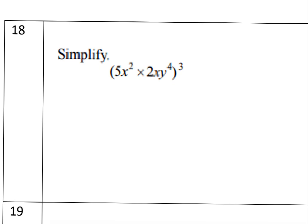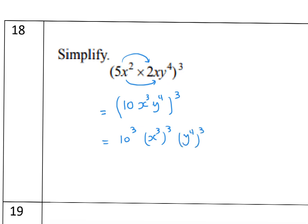For the next problem: (5x^2 · y^4)^3 times 2x. First multiply the coefficients: 5 times 2 is 10, and x^2 times x^1 gives x^3. So we have (10x^3 · y^4)^3. Distribute the power: 10^3 is 1000, x^3 all to the power 3 gives x^9, and y^4 all to the power 3 gives y^12. The answer is 1000x^9y^12.